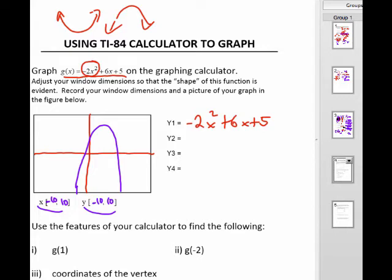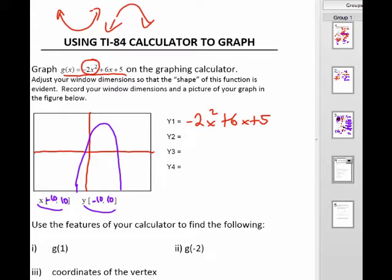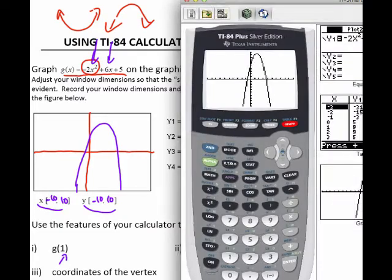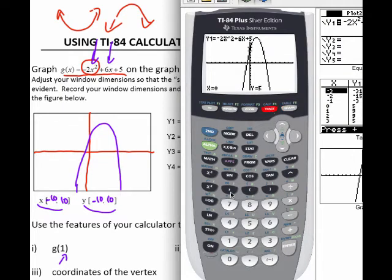So now the calculator has some other features that allow you to find certain things about the graph. g of 1. Now remember, g of 1 just means that if I was to put 1 into the function, what y value would I get? So on your calculator, you can simply press the trace button and press x equals 1, enter, and it'll tell you the y value is 9. So g of 1 is 9.